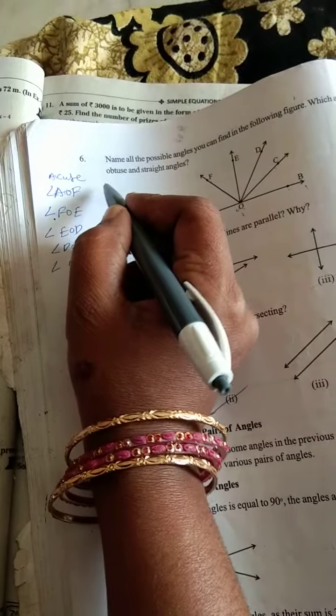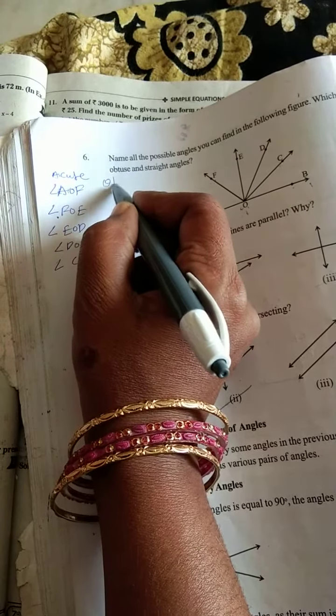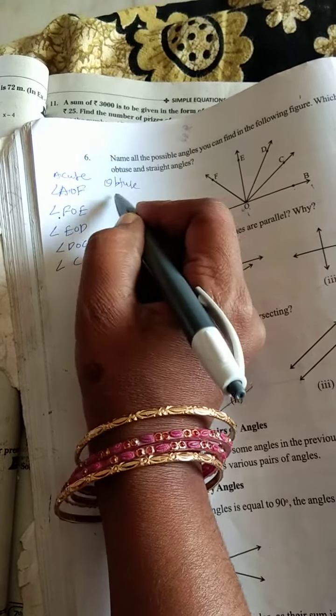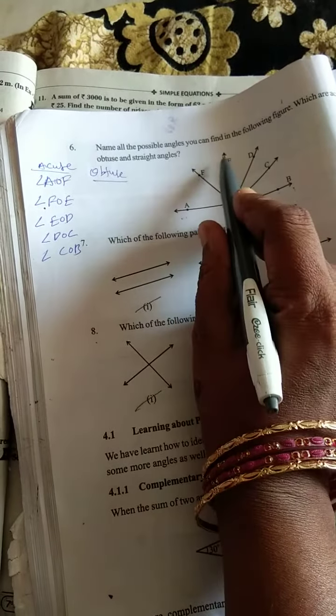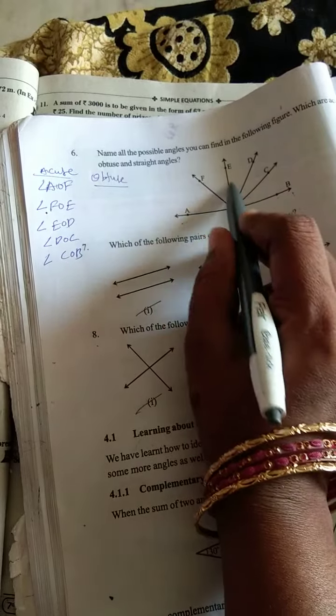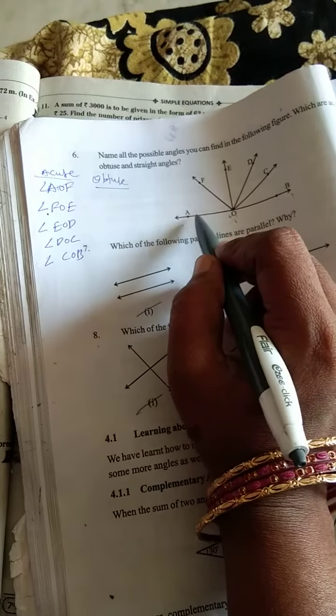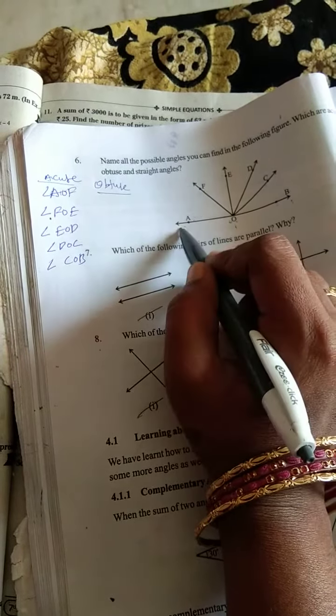Next to obtuse angles. What we can take as obtuse angles? More than 90. If it is like this means this is 90.